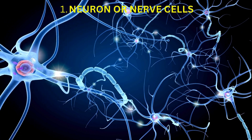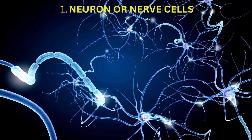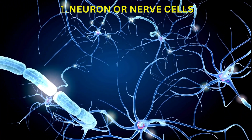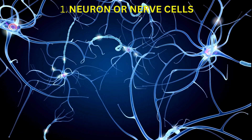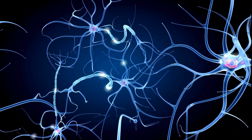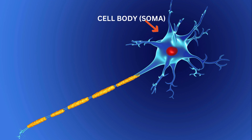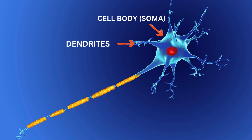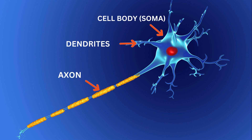Neurons are the functional units of the nervous system, responsible for transmitting electrical signals. They have a unique structure with three main parts: the cell body, or soma, which is the central part of the neuron containing the nucleus and other organelles; dendrites, which are branch-like extensions that receive signals from other neurons or sensory receptors; and the axon, a long slender extension that transmits signals away from the cell body to other neurons, muscles, or glands.